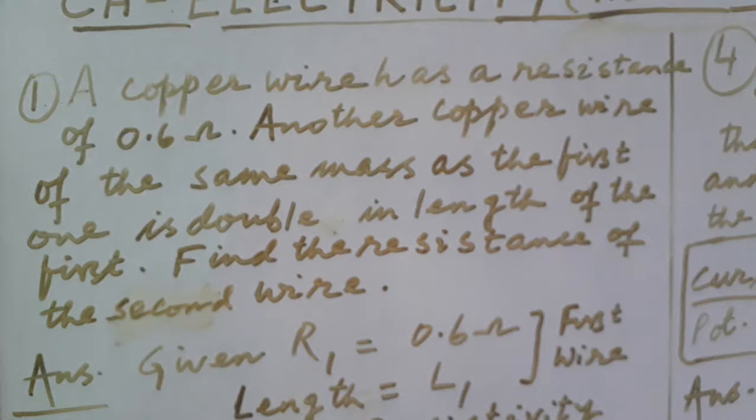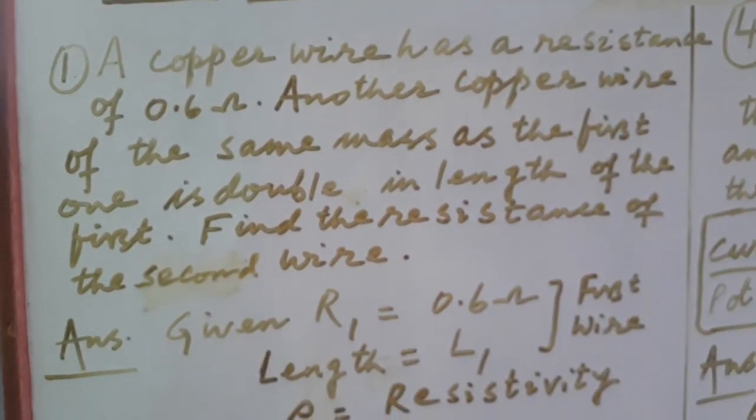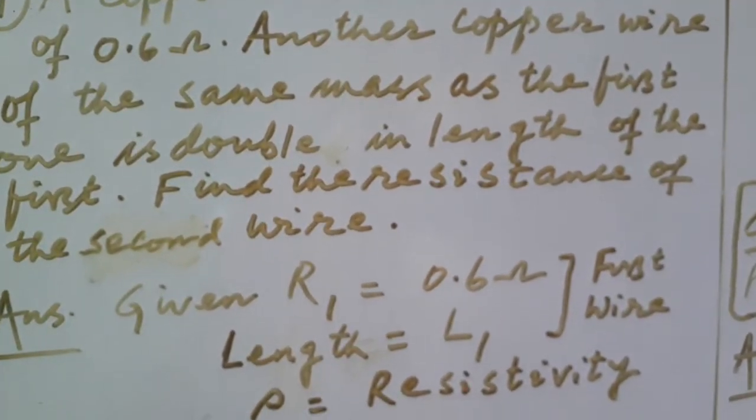A copper wire has resistance of 0.6 ohm. Another copper wire of the same mass as the first one is double in length of the first. Find the resistance of the second wire.